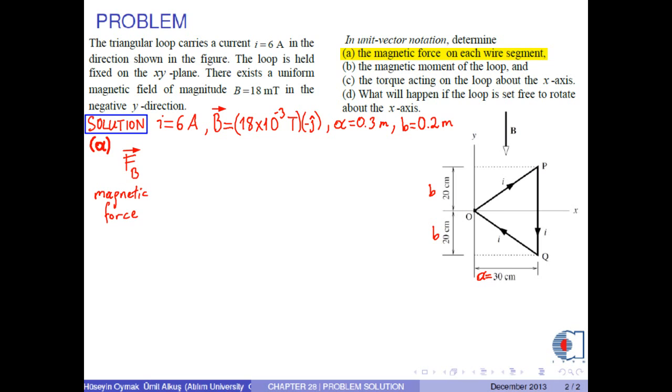Magnetic force on a current carrying wire whose current length vector is L due to the magnetic field B is calculated by the formula I times L cross B. And the direction of the magnetic force is found by the right-hand rule. First, we label each wire segment as 1, 2 and 3.